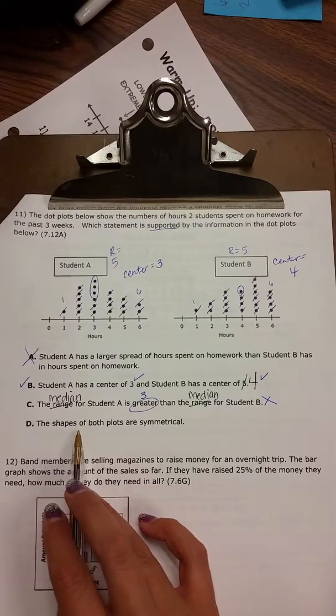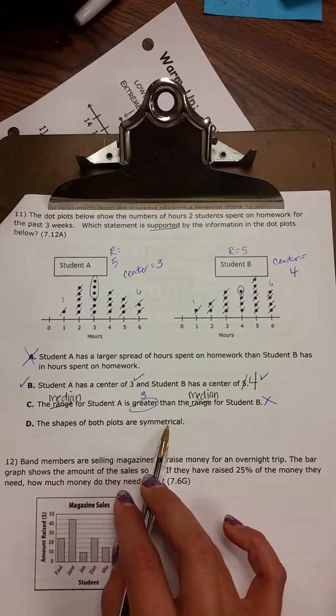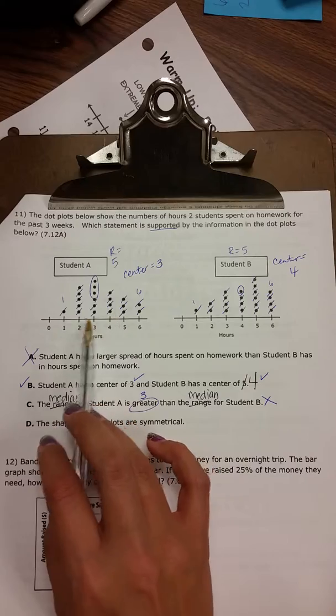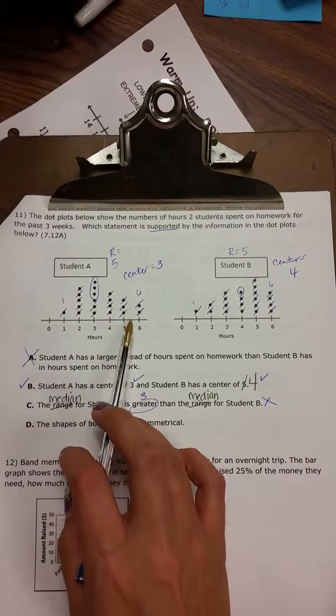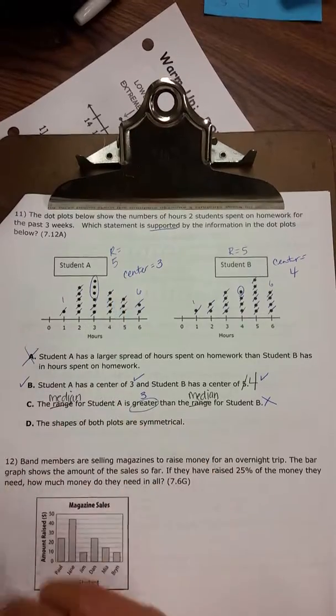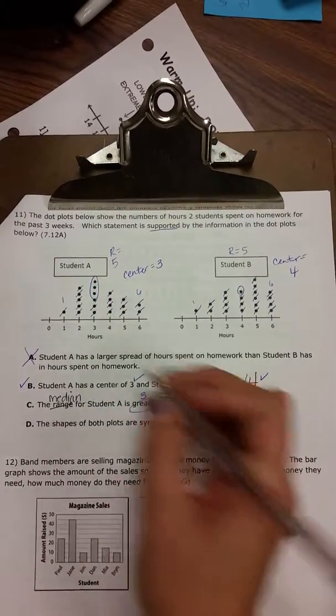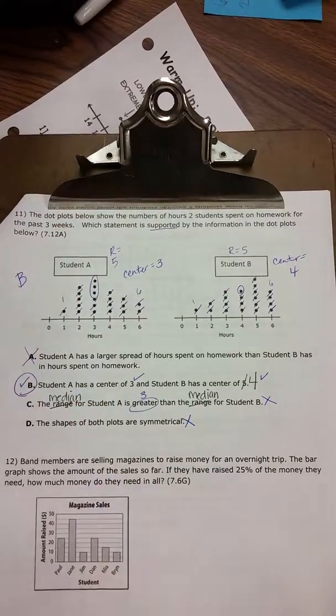And the shapes of both plots are symmetrical. They're kind of symmetrical to each other. But no, they are not symmetrical. So B is the best answer for number 11.